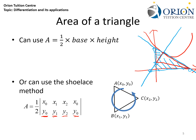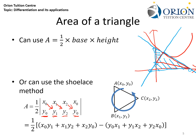To evaluate the modulus, multiply all terms connected by a downward arrow, then subtract all terms connected by an upward arrow. This gives: (x₀y₁ plus x₁y₂ plus x₂y₀) minus (y₀x₁ plus y₁x₂ plus y₂x₀). Evaluating this entire expression gives us the area of the triangle.